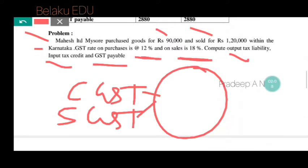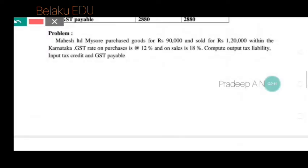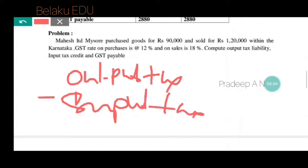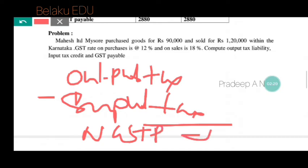To calculate the net GST payable, the formula is: Output Tax minus Input Tax equals Net GST Payable. So we first find the output tax, then the input tax credit, and finally the net GST payable.